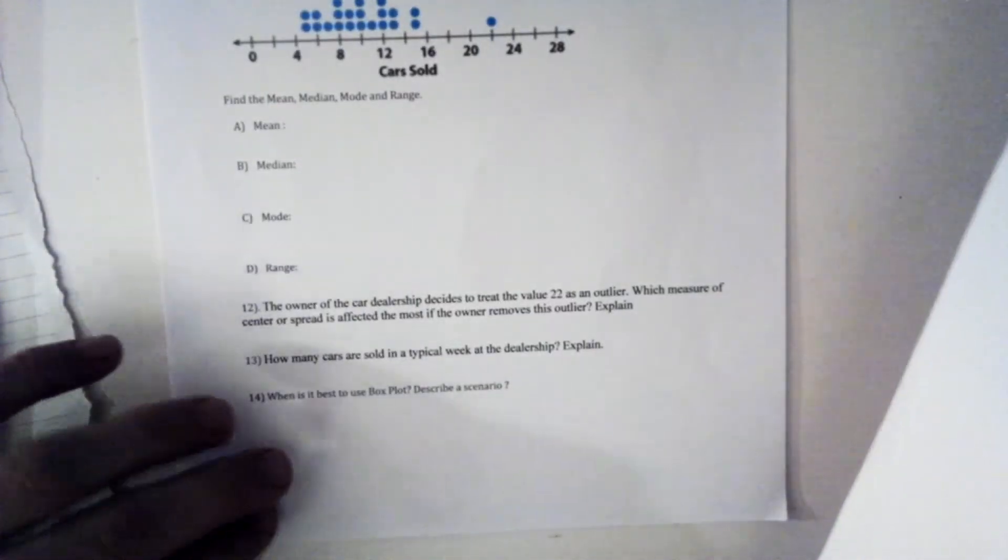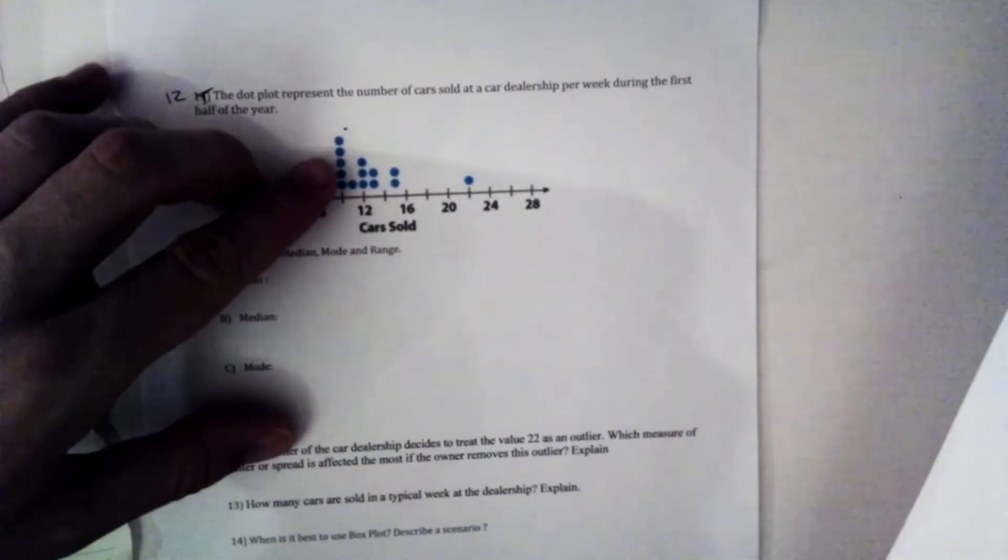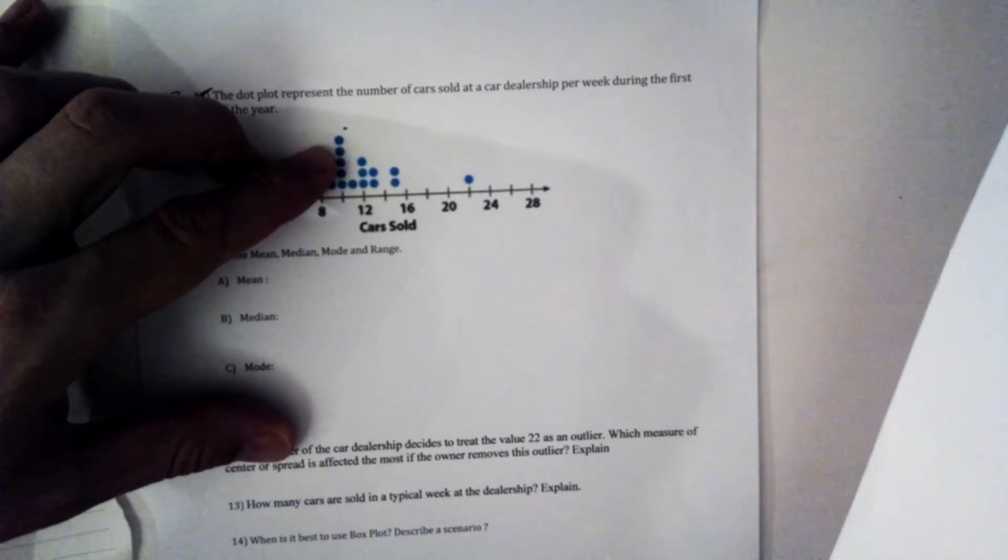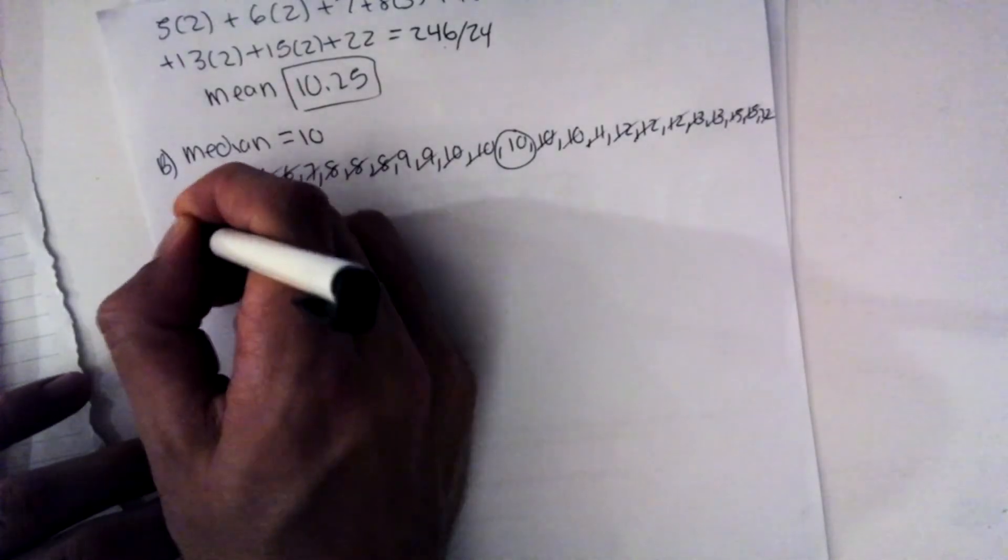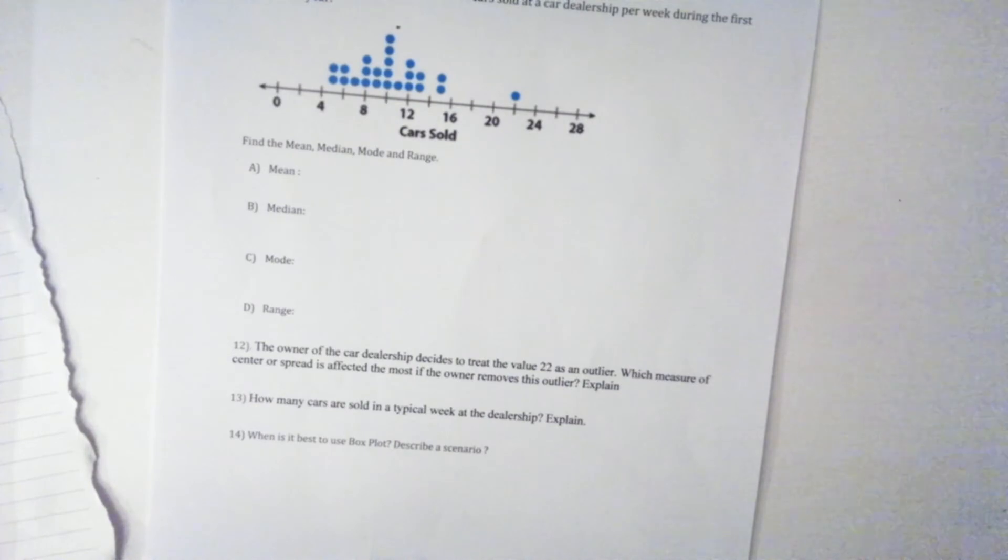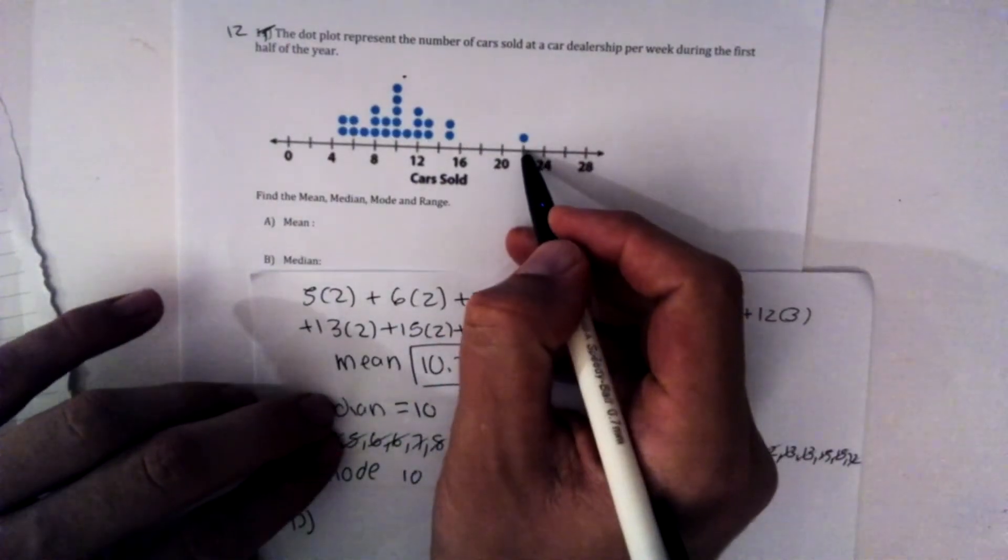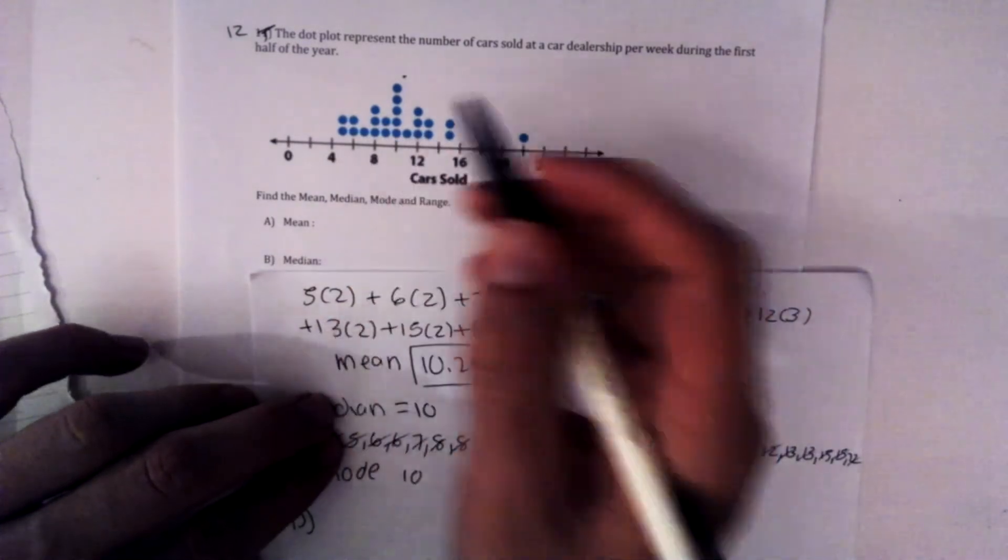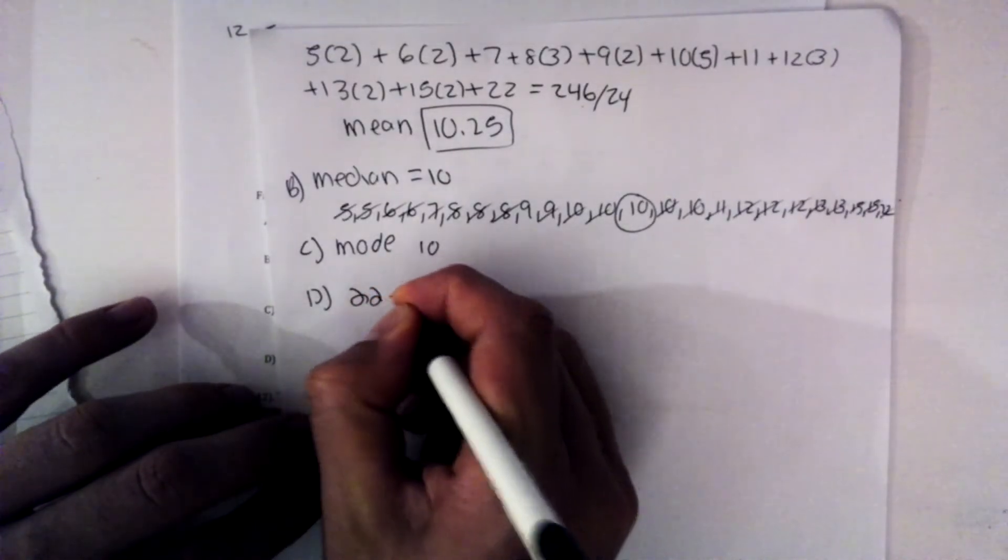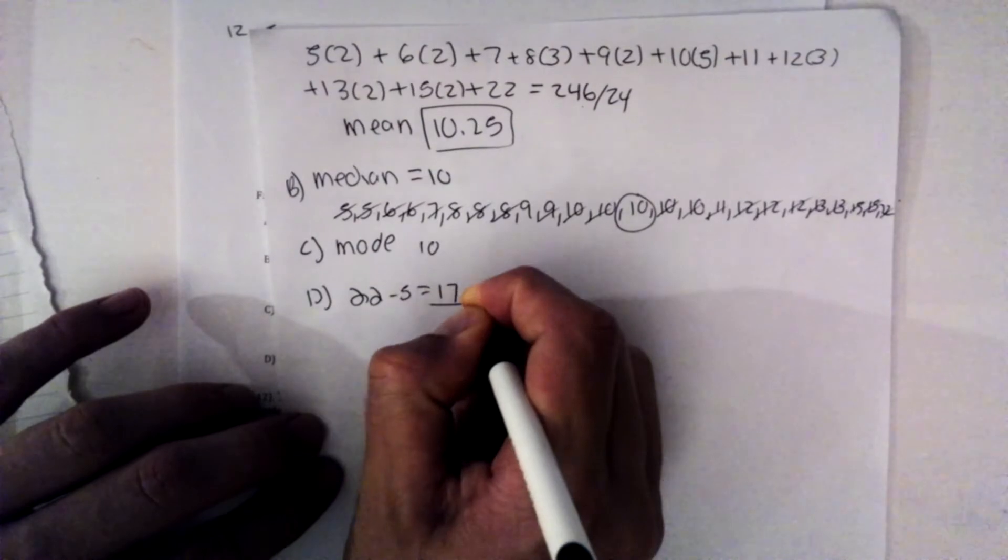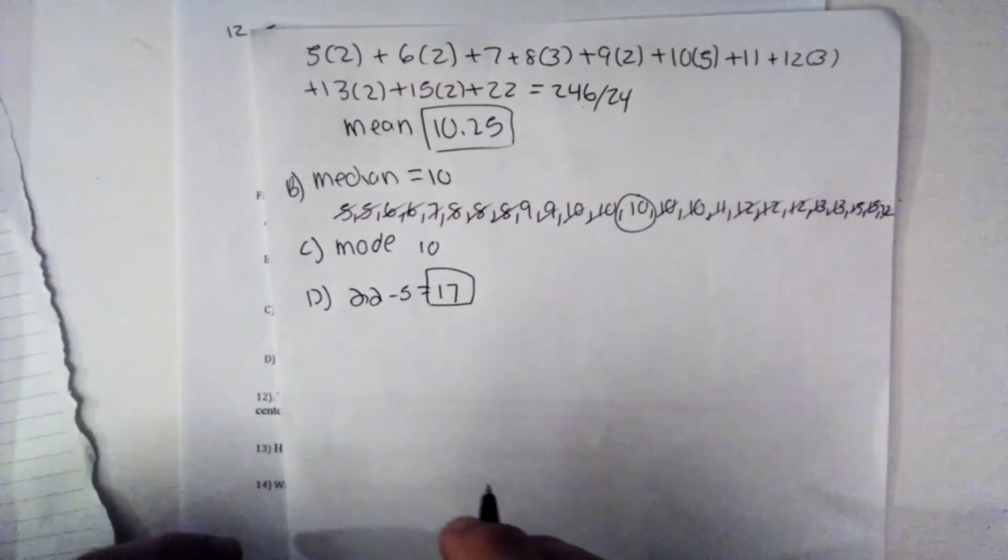What is the mode of our data? Well, that's easy. You just look here at the number that appears most often, which is 10. So our mode asks us to find the range. So we'll take the biggest number and subtract it from the smallest number. So our biggest number in this case is 22. And our smallest number is 5. So we'll do 22 minus 5, which is 17. So our answer is 17.